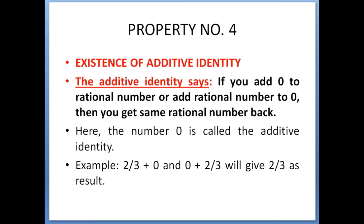Whether you add 0 to that rational number or add the rational number to 0, the answer you get is the same rational number again. So 0 is the additive identity.